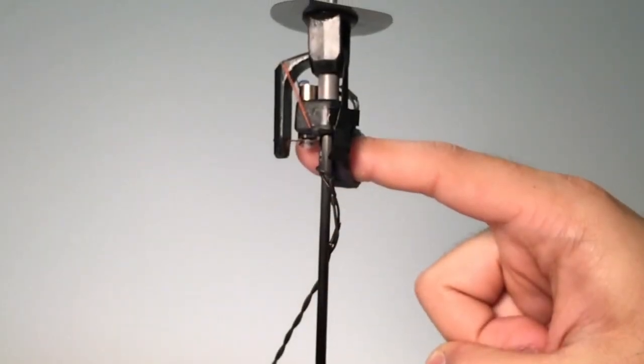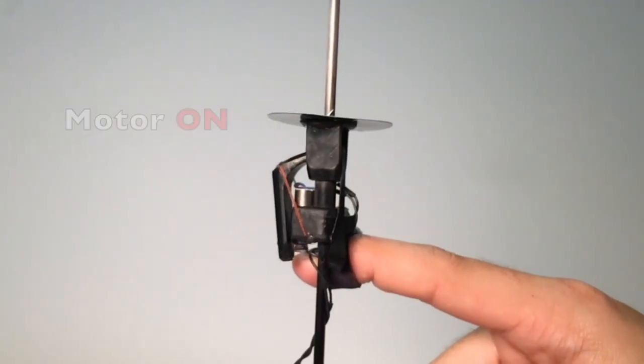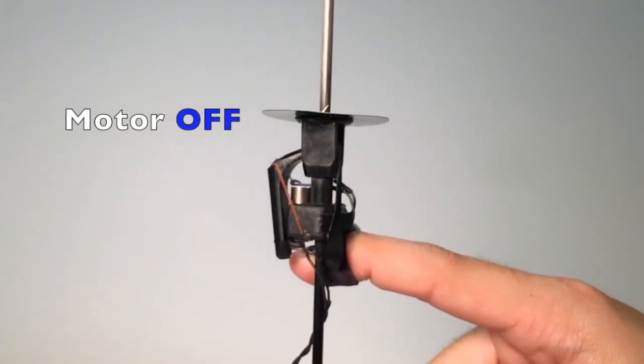When the user performs a grasping motion, a small motor activates the brake. Once the brake is fully activated, the motor can be turned off, and the user's grasping force keeps the brake engaged.